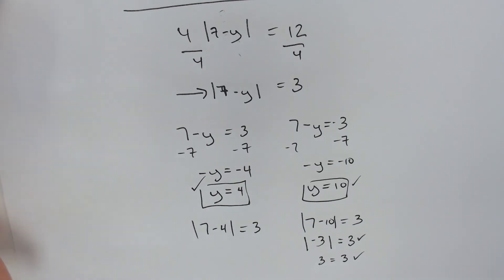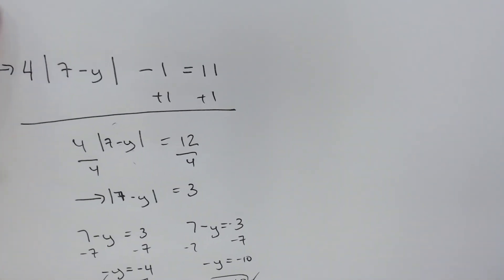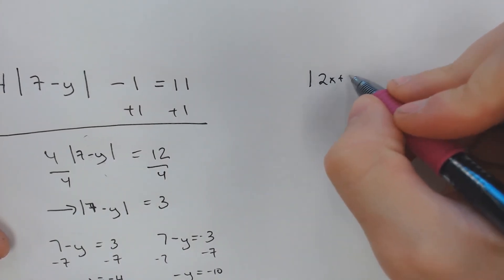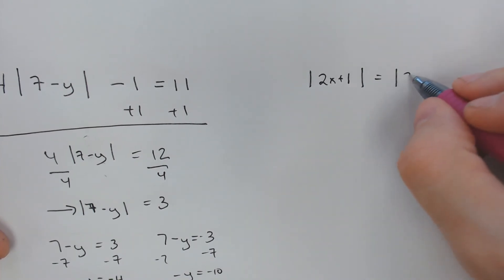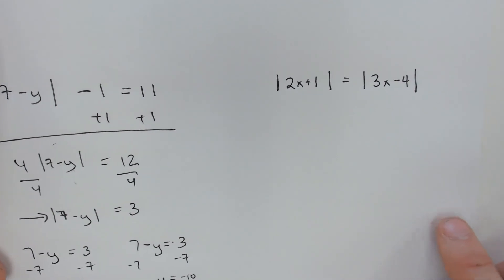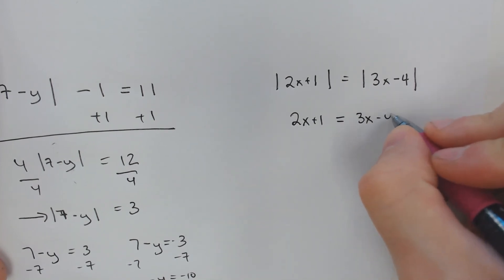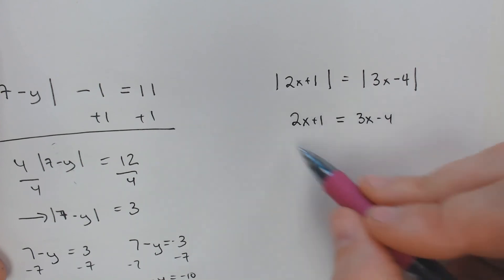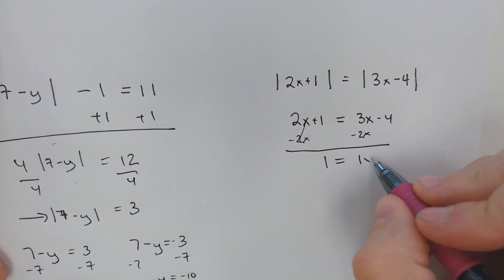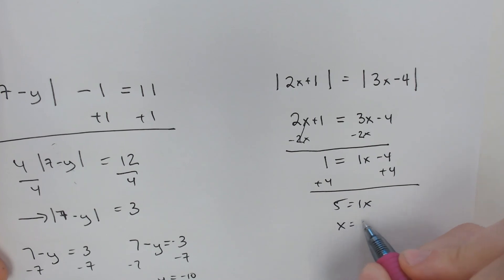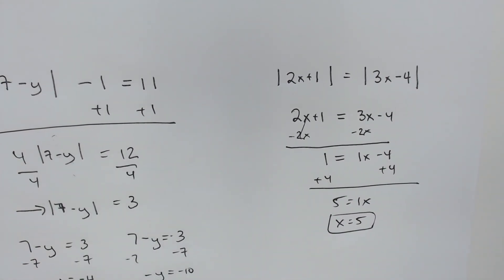Another scenario you might see yourself in is if you have an absolute value of like 2x plus 1 equals the absolute value of, let's say, 3x minus 4. And if this happens, hooray, you just pretend the absolute value bars don't exist at all. They just disappear, and you get 2x plus 1 equals 3x minus 4, and you solve normal. Not a big deal. I'm going to move the 2x to the right side. 1 equals 1x minus 4. Add 4, add 4. 5 equals 1x, so x equals 5. There is no positive and negative version of this because their absolute values are on both sides of the equal sign.